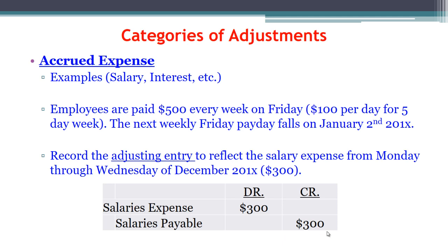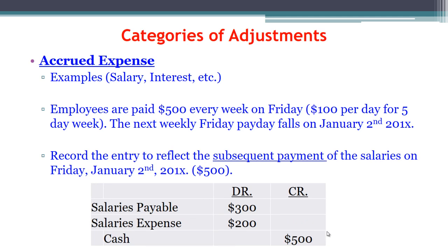We're increasing both of these accounts for this accrual. The subsequent entry occurs next year when we actually pay. On January 2nd, the full payday is $500, so we credit cash for $500. We debit salaries payable for the $300 we set up earlier to decrease it, and we still have $200 extra not yet recorded as an expense — we record it now, representing Thursday and Friday that fall in the later year. $500 in debits, $500 in credits. Remember, cash was not in the adjusting entry, but it is in the subsequent entry that deals with the payment.